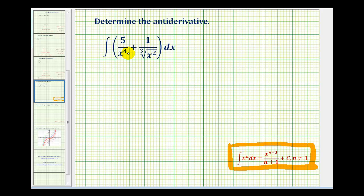So we'll have to move this x to the fourth up to the numerator. So this will be five x to the negative four power. And then we need to rewrite this as a rational exponent and move it up to the numerator as well. So this would be x to the two-thirds power. But when we move it up into the numerator it will be x to the negative two-thirds power. So we'll have the indefinite integral of five x raised to the negative fourth power plus x to the negative two-thirds power.